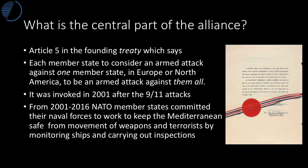The OCR specification for Power and Borders refers to treaties and norms which govern global governance. The most famous founding treaty of the NATO alliance is Article 5, which states that if one member state is attacked, the other member states will regard it as an attack against them all, leading to the obligation to mobilize military forces to defend another country. This article has been invoked only once since 1949, and that was in 2001. In response, NATO member states committed naval forces to keep the Mediterranean safe from weapons and terrorist movement, monitoring and inspecting ships to protect Europe from threats similar to the Twin Towers attack.